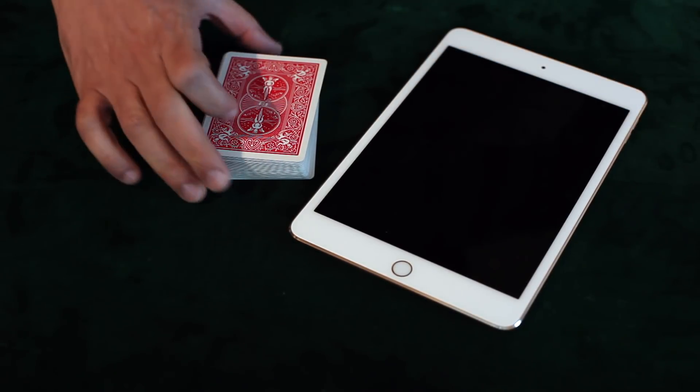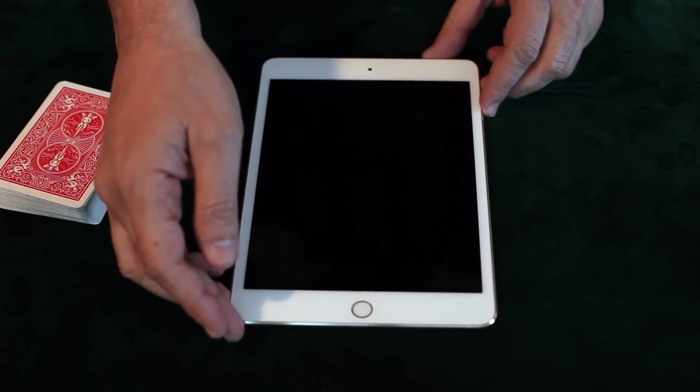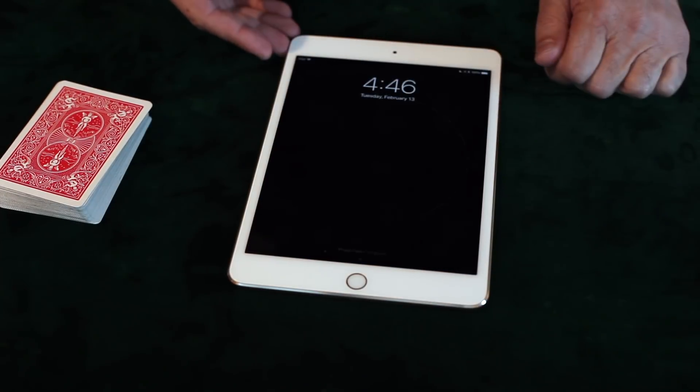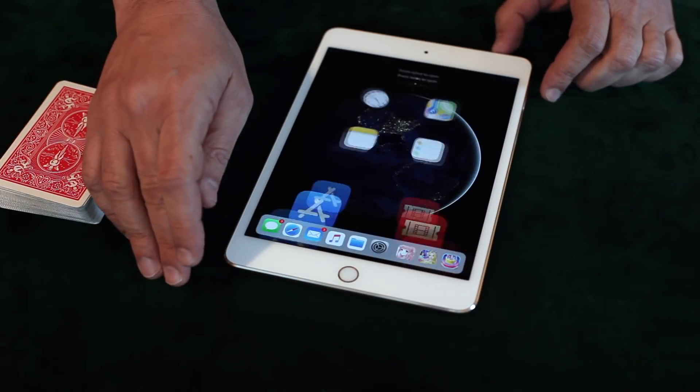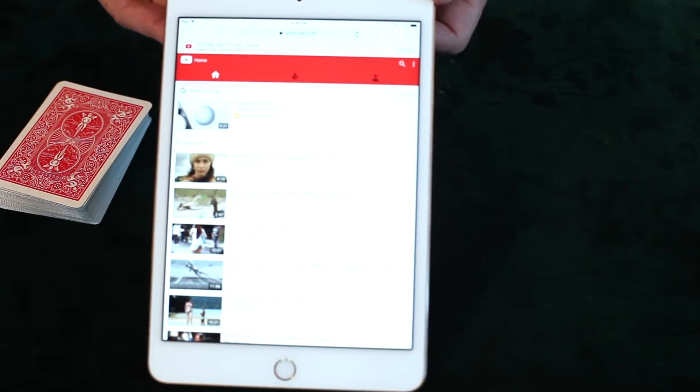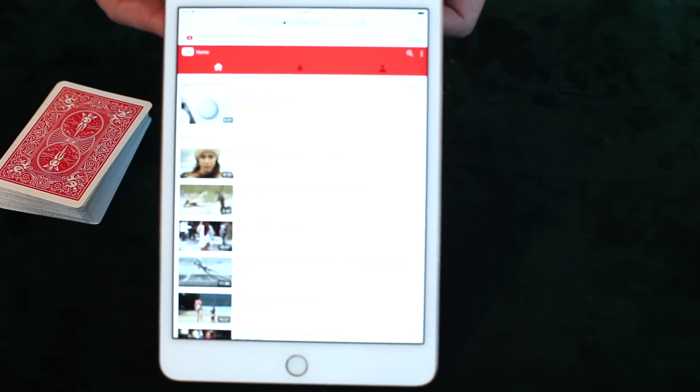The magician starts out by borrowing a phone from a spectator. This iPad is going to represent the spectator's phone. Once it's turned on, the magician goes to any browser. We'll use Safari, and the magician goes to YouTube very openly in front of the spectators.